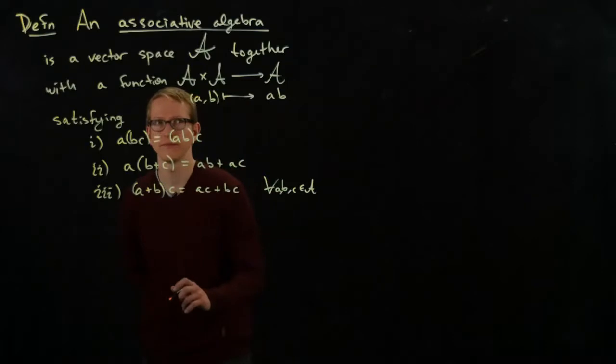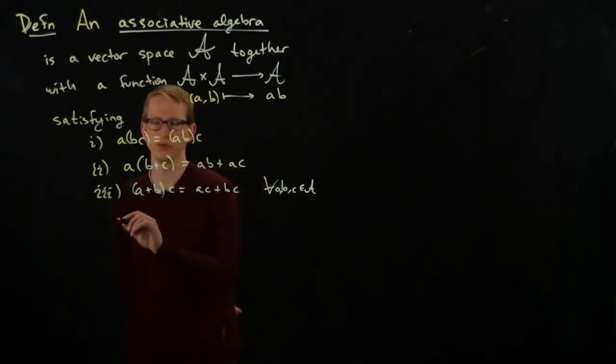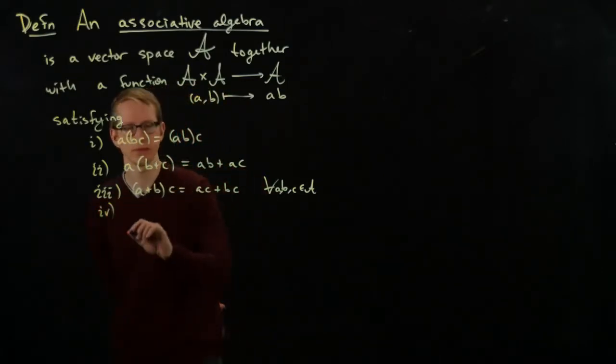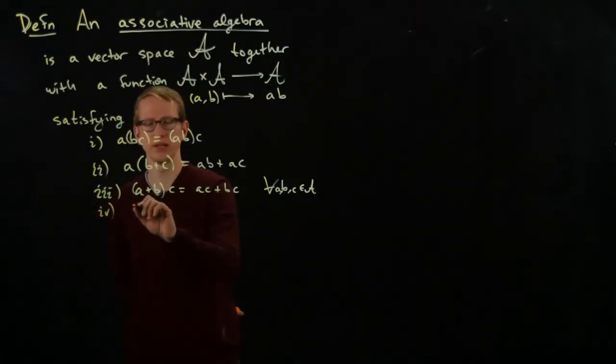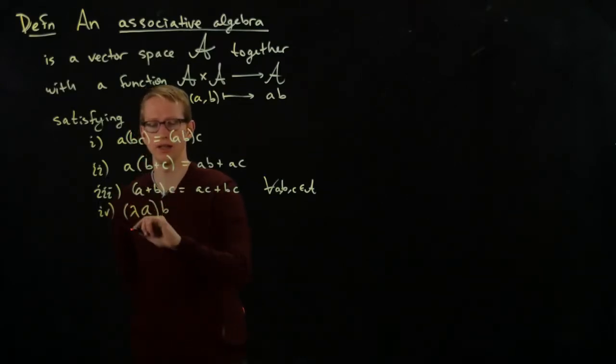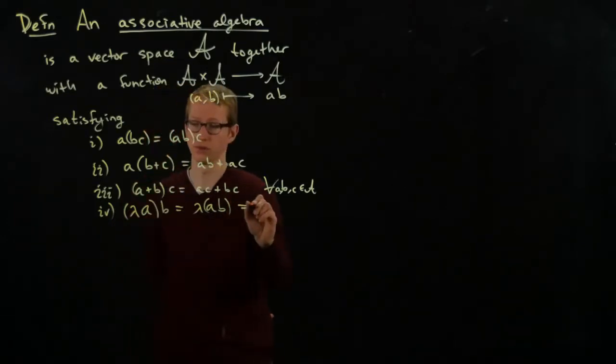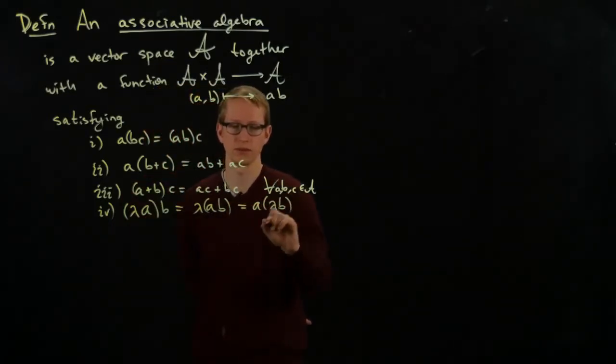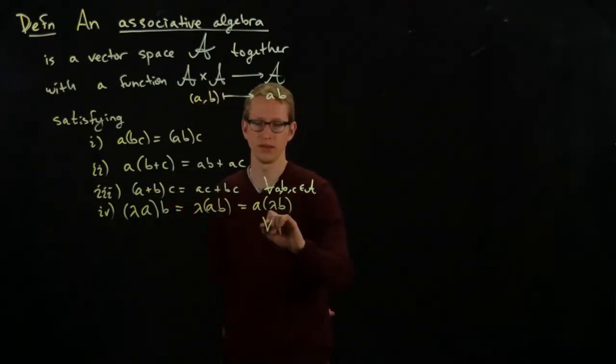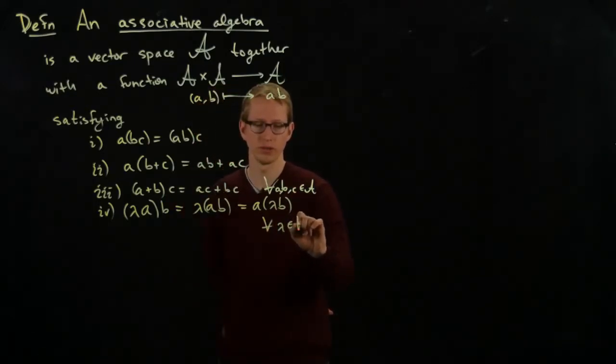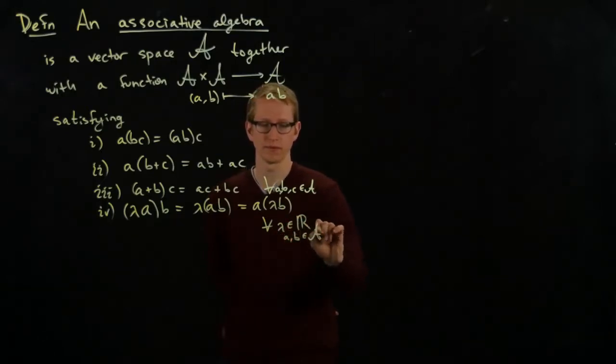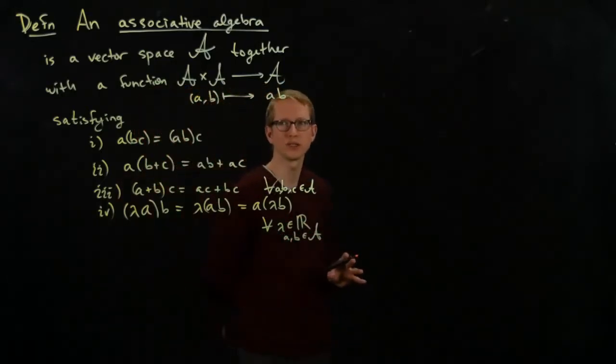And in fact, just to be a little safe, I should have thought about this a little bit more deeply, but I think we also need that if I multiply a constant multiple of A, then this is going to be lambda times (A times B). And also, this also equals A times (lambda B). I believe I also need something like this for all real numbers lambda, and A, B in A. So this is what an associative algebra is.